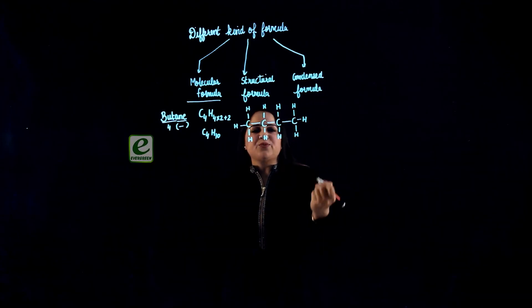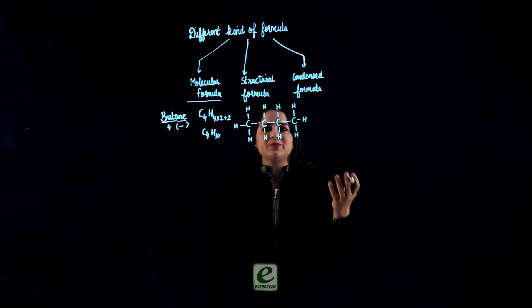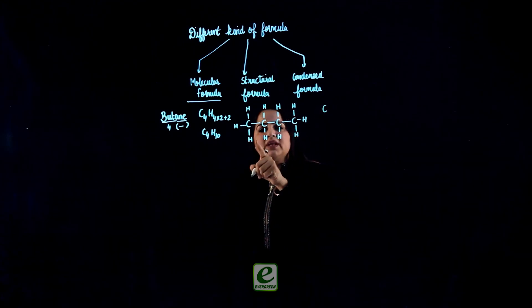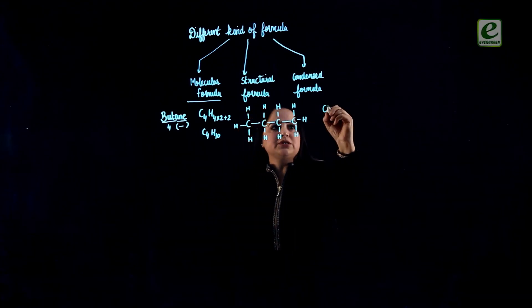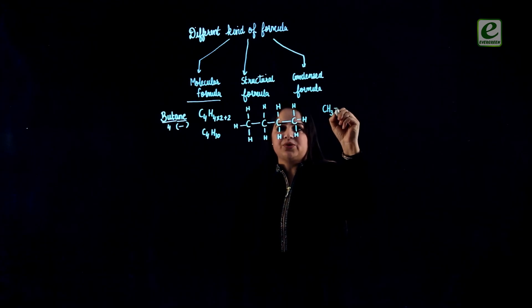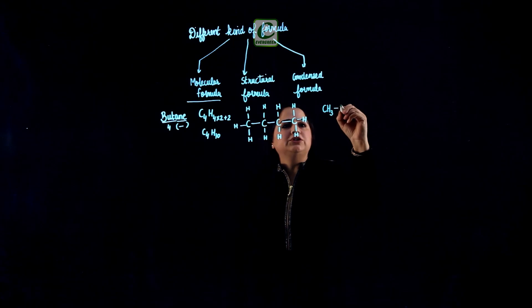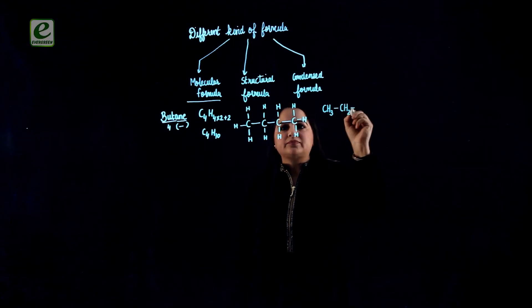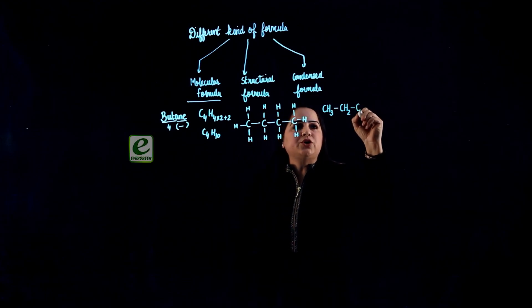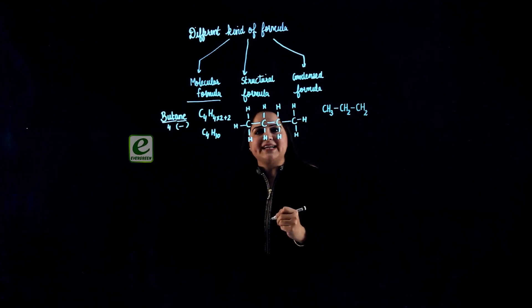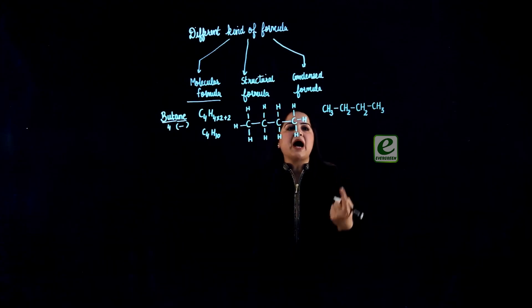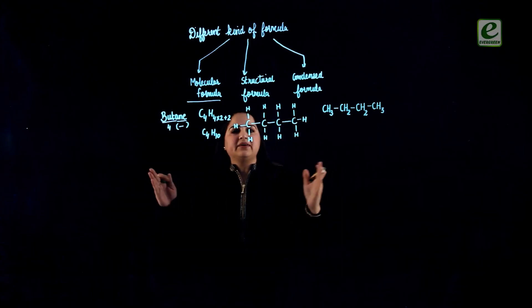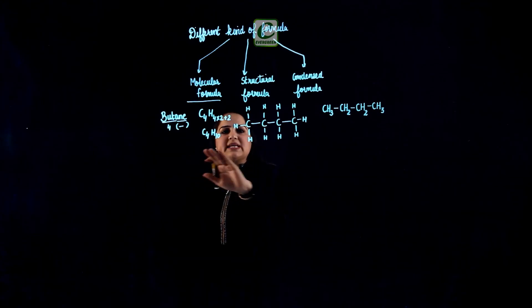When we talk about condensed formula, we talk about the group of atoms which are present. In the case of butane, the first carbon is associated with 3 hydrogens, so I will write it as CH3. The second carbon has 2 hydrogens, so CH2. The third carbon is again associated with 2 hydrogens, so CH2. The last carbon is associated with 3 hydrogens, so CH3. The number of carbons and hydrogens remains the same but only the representation changes.